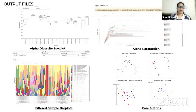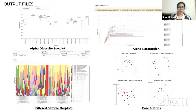It includes QIIME2 alpha rarefaction, which illustrates the number of samples in each group. QIIME2's remove-eukaryota step generates an interactive bar plot of taxa present in the samples. It also includes group significance plots covering alpha and beta group significance.